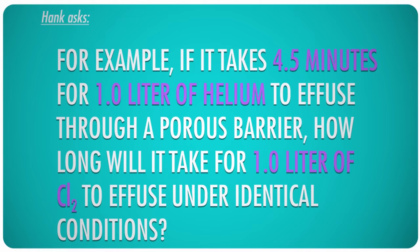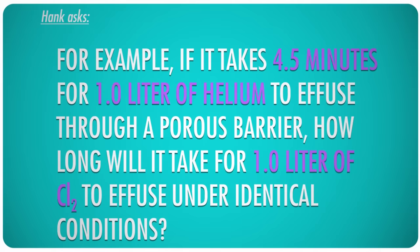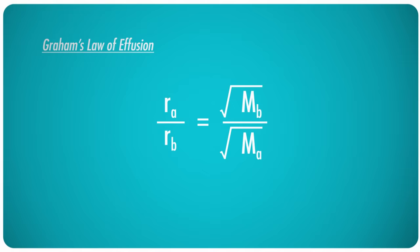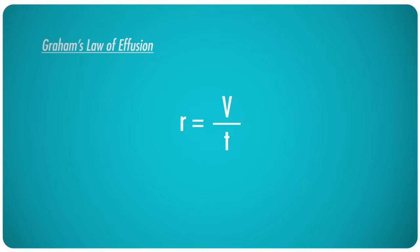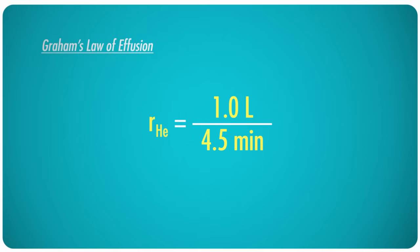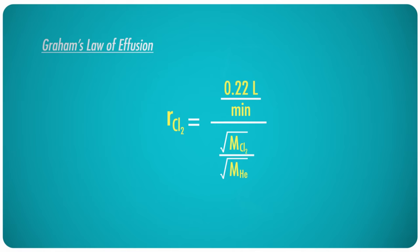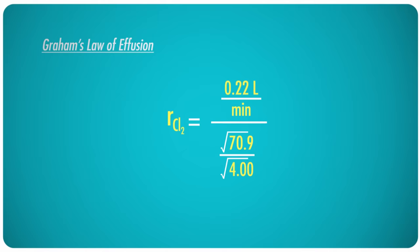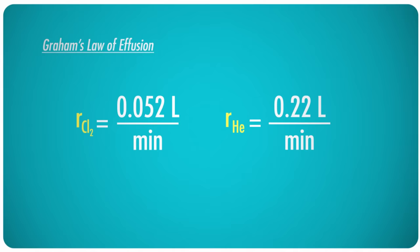For example, if it takes 4.5 minutes for 1.0 liter of helium to effuse through a porous barrier, how long will it take for 1.0 liter of chlorine to effuse under identical conditions? All we need is Graham's Law. Let helium be gas A and chlorine be gas B. First, we find helium's rate of effusion: 1.0 liter in 4.5 minutes gives a rate of 0.22 liters per minute. Chlorine gas has a molar mass of 2 times that of atomic chlorine — 35.5 times 2 equals 70.9 — and helium's molar mass is 4.00. Careful calculation shows that Cl2's rate of effusion would be 0.052 liters per minute, significantly slower than helium. This is reasonable because Cl2 is much more massive than helium.